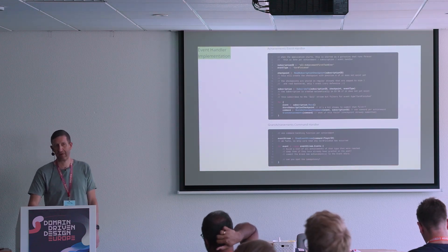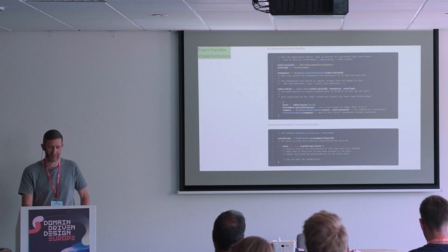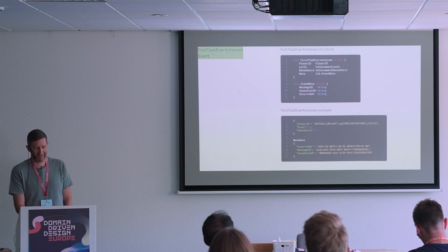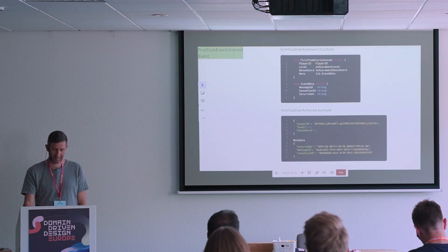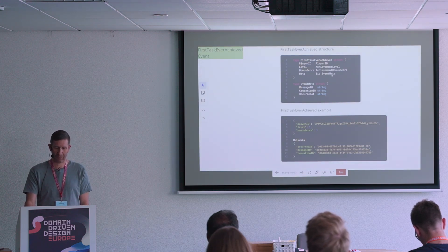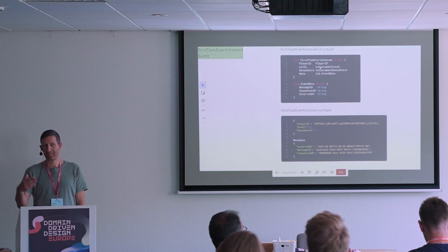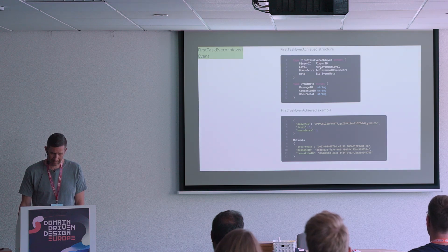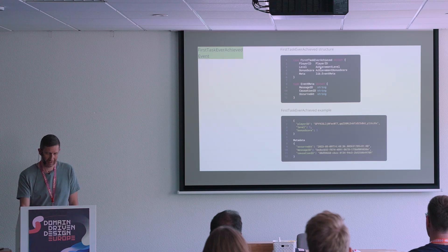So it's a very solid system, but very simple to implement — and that's the cool thing about it. It's not performance-optimized, obviously, but we all know premature optimization is often unnecessary. Because the system generates achievement events, I'm showing one of them for 'first task ever achieved.' It just has a player ID, a level for this achievement, the bonus score, and the same metadata we've seen before. Other achievement events look a bit different because they might not have a level. Here's the JSON code for that — level one and bonus score one are essentially hardcoded in the code.